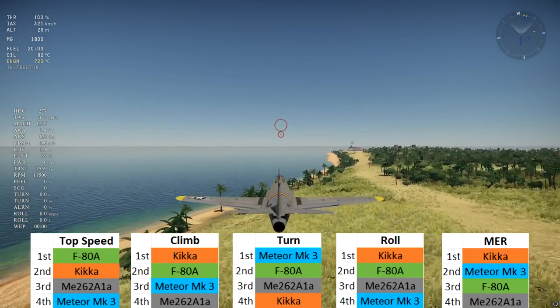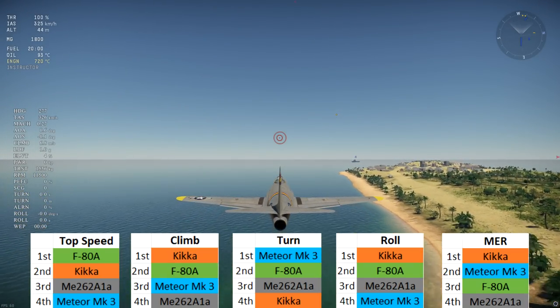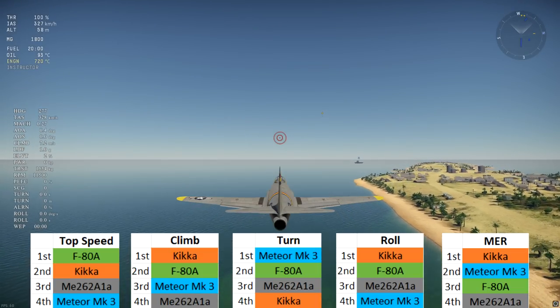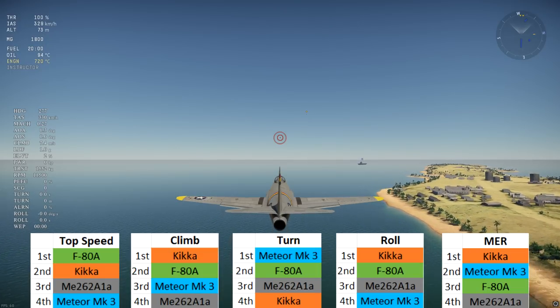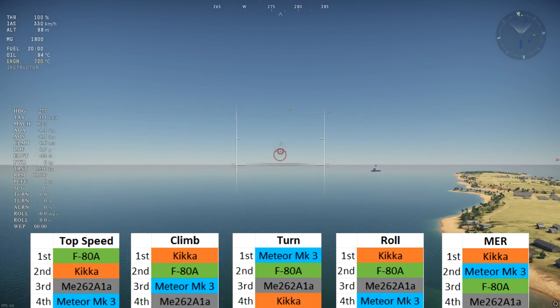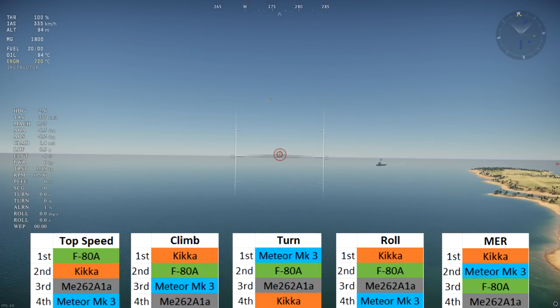It's an easy decision to put the Kika up to 7.0 BR - I'd say it's as good as the F-80. The ME262 does lag behind its opponents in most respects, but they are still reasonably close in performance.